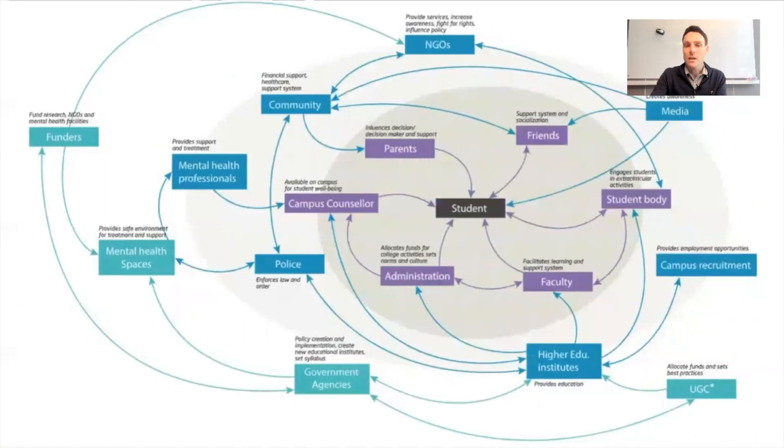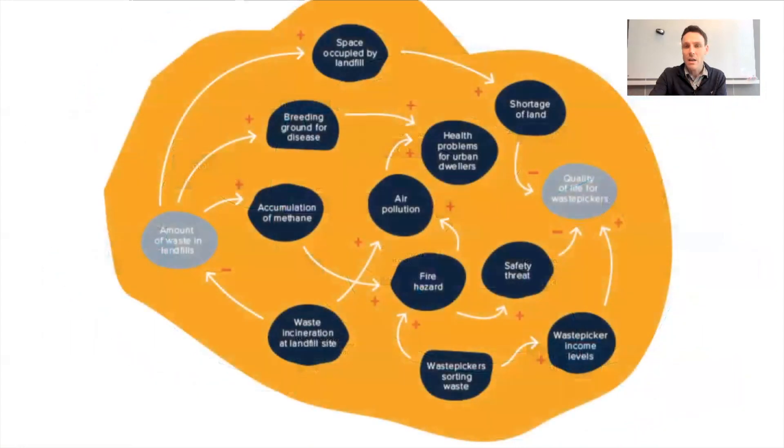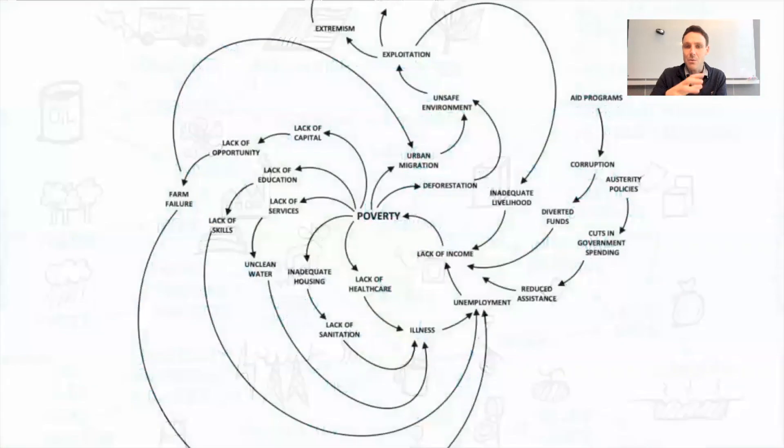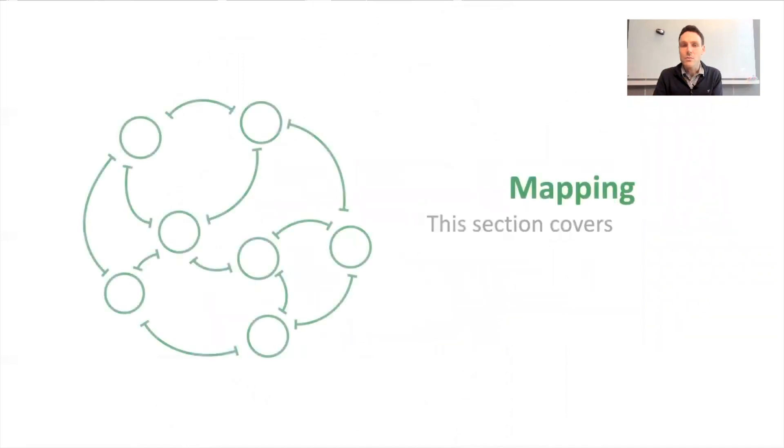During the course we're going to look at many different types of maps so that you learn how to understand them, understand how they work, and also build your own. We'll go from the more basic ones to ones that are more complex over time, building up from systems maps to causal loop diagrams to systems archetypes.